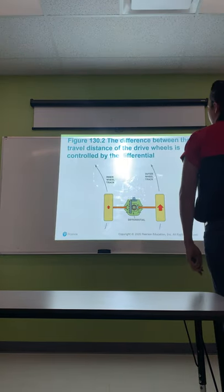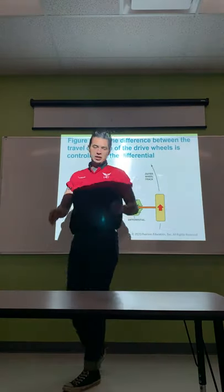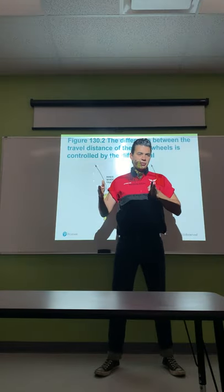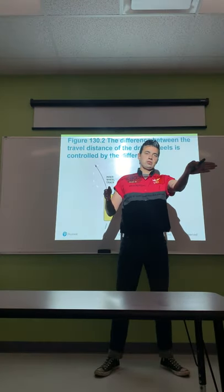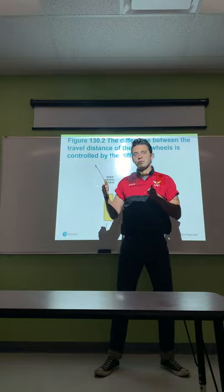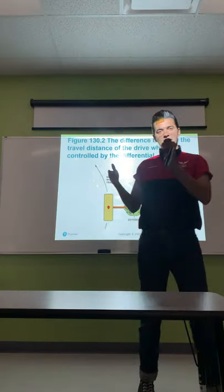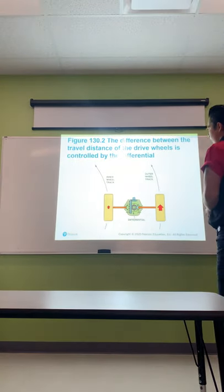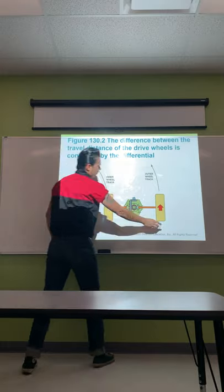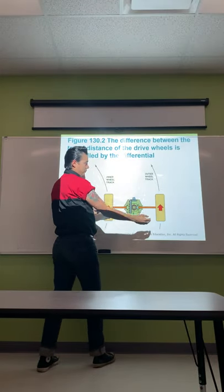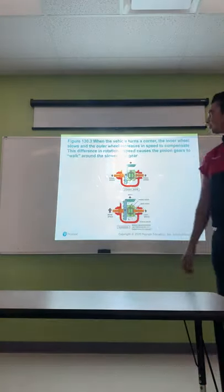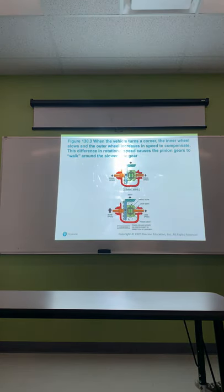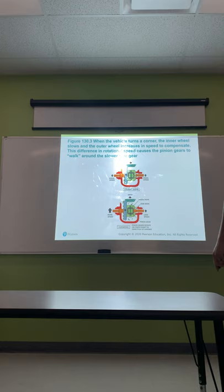The difference in travel distance of the drive wheels is controlled by the differential. When coming around a turn, because the wheels are spaced apart, they both have to travel different distances. The inside wheel travels a much shorter distance than the outside wheel, so the outside wheel has to rotate faster to keep up. When the vehicle turns a corner, the inner wheel slows and the outer wheel increases in speed to compensate, causing the pinion gears to walk around the slower side gear.